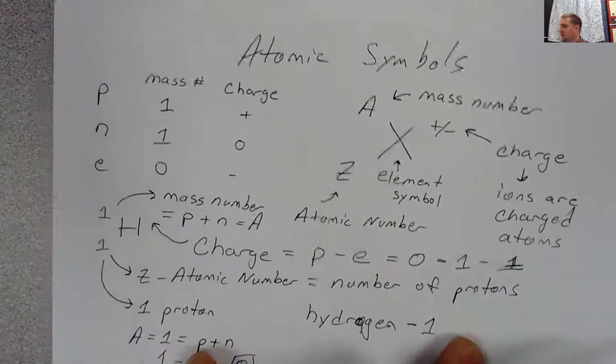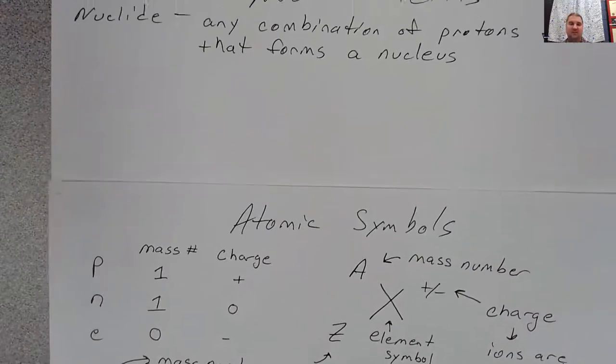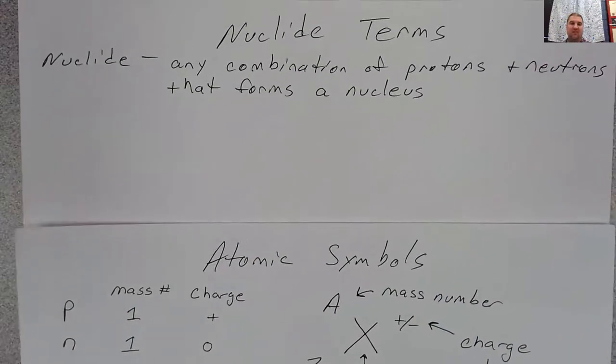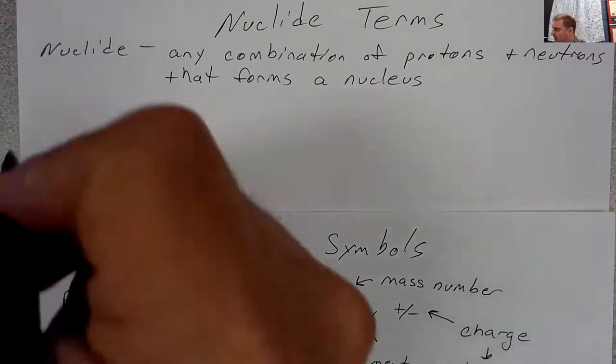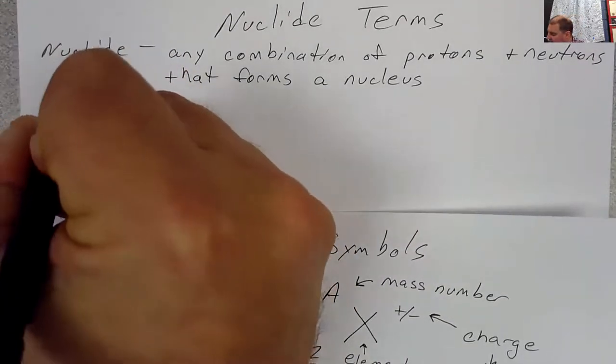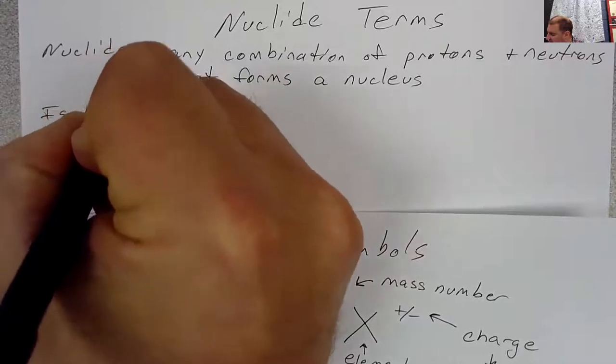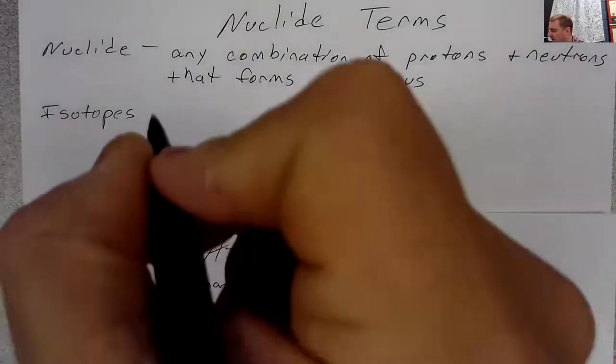So a nuclide is any combination of protons and neutrons that forms a nucleus. And so in a lot of ways we will still use atomic symbols when we talk about these nuclides, but we're not going to be as worried about what the charge is. We're really going to be focused more on how many protons something has and how many neutrons something has. Within nuclides, there's many different ways that we can combine these protons and neutrons. And so one of the big ways we can combine them or talk about them is we can talk about isotopes.